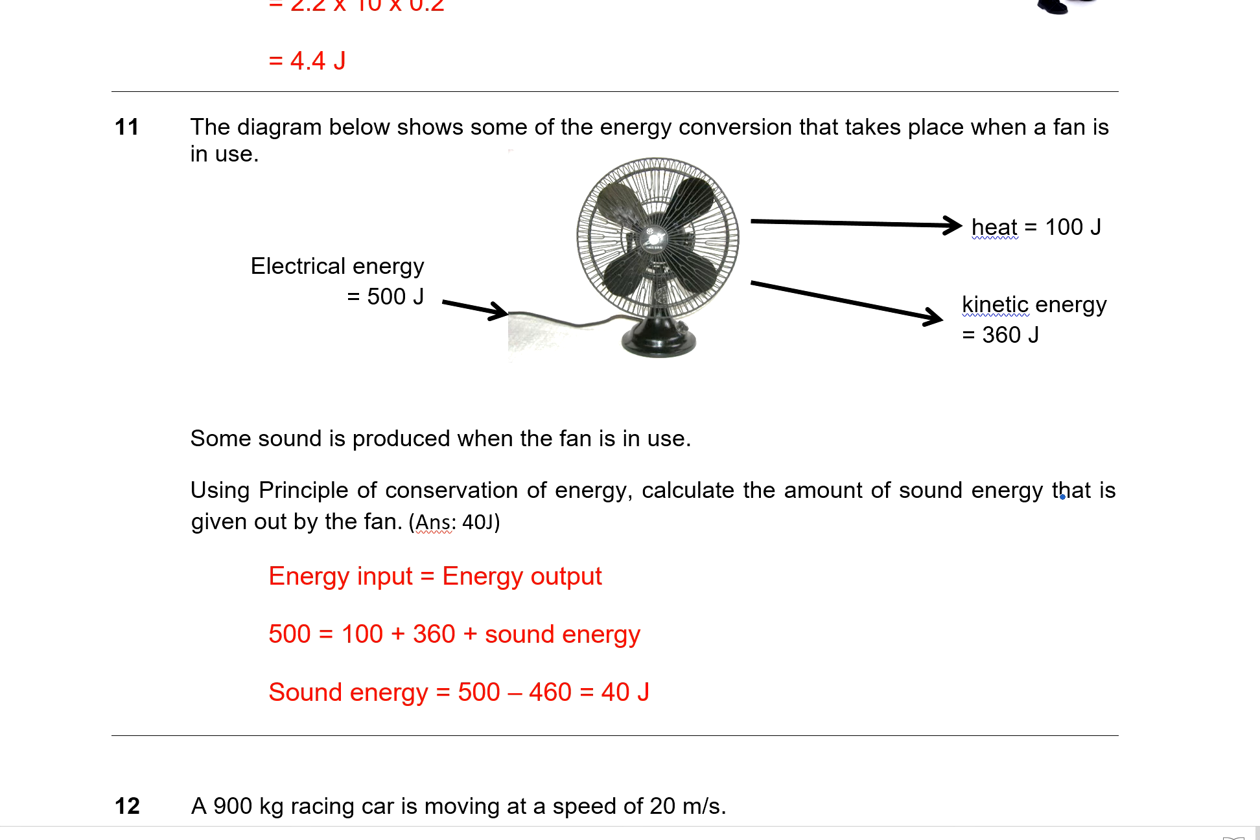Question 11. This is a fan. Now what a fan does is when you supply them with electrical energy, it will use this energy and the motor will turn the blade and you will have kinetic energy because the blades are moving. So it says you will have 360 joules of kinetic energy produced by this fan converted from the electrical energy. And of course, during this spinning, the motor may get hot. So you get 100 joules of heat produced as well. The question says that some sound is also being produced, but we do not know what is the value of this amount. The question asks you to calculate the amount of sound energy.